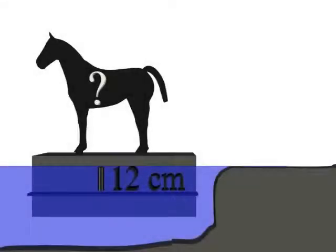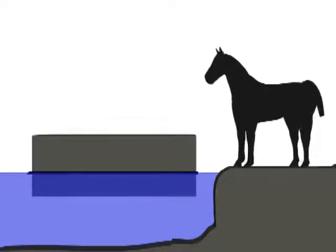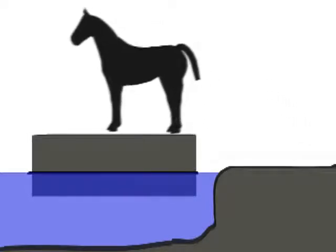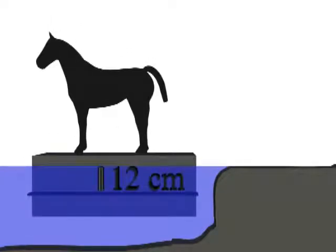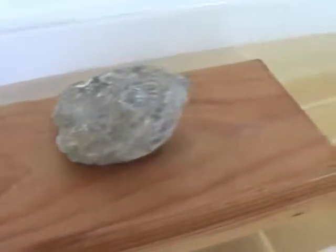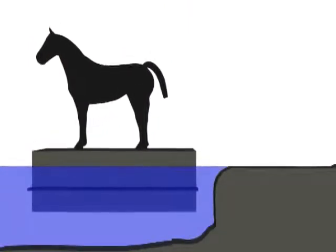Now to solve the horse problem. We have a rectangular barge measuring 300 cm by 200 cm, sitting in a freshwater lake. A horse jumps onto the barge, causing the barge to sink 12 cm. Like the stone sitting on the wood block, the horse has displaced water equal to its own weight. We need to calculate the weight of this displaced water. If you think you know how to do this, pause the video and do the math.